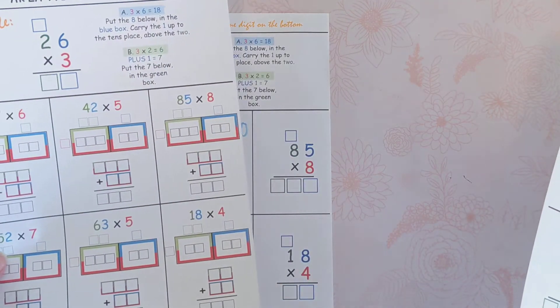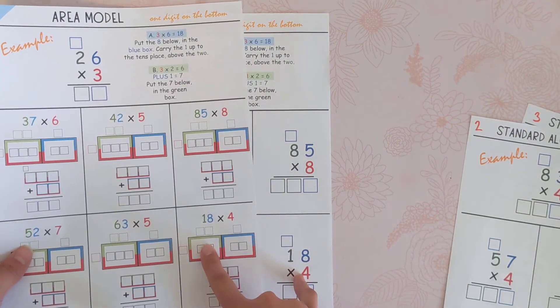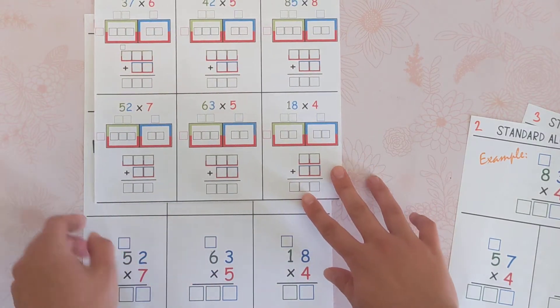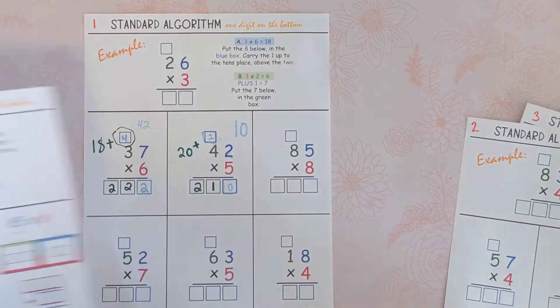So area model, partial products, they have the same questions on them, same numbers, with different algorithms so that people can work through with the algorithm that works for them. All right, let's go ahead and get started.